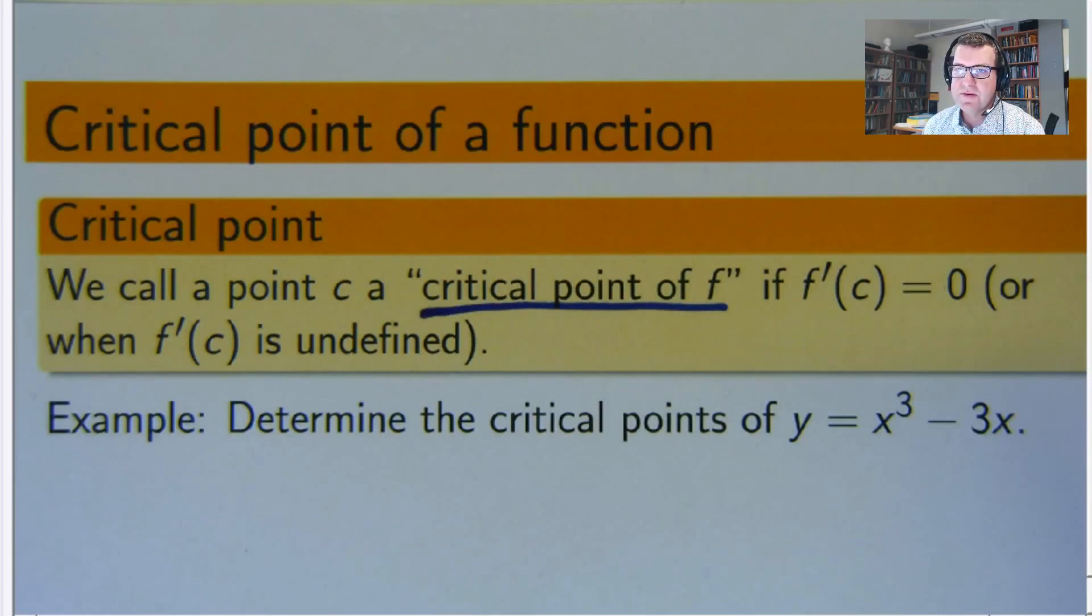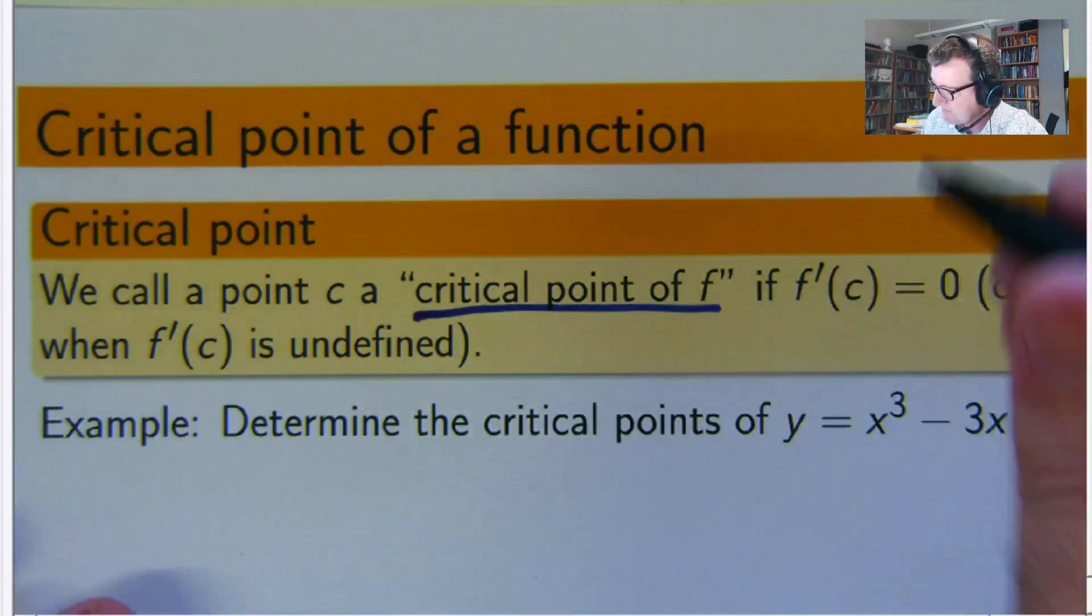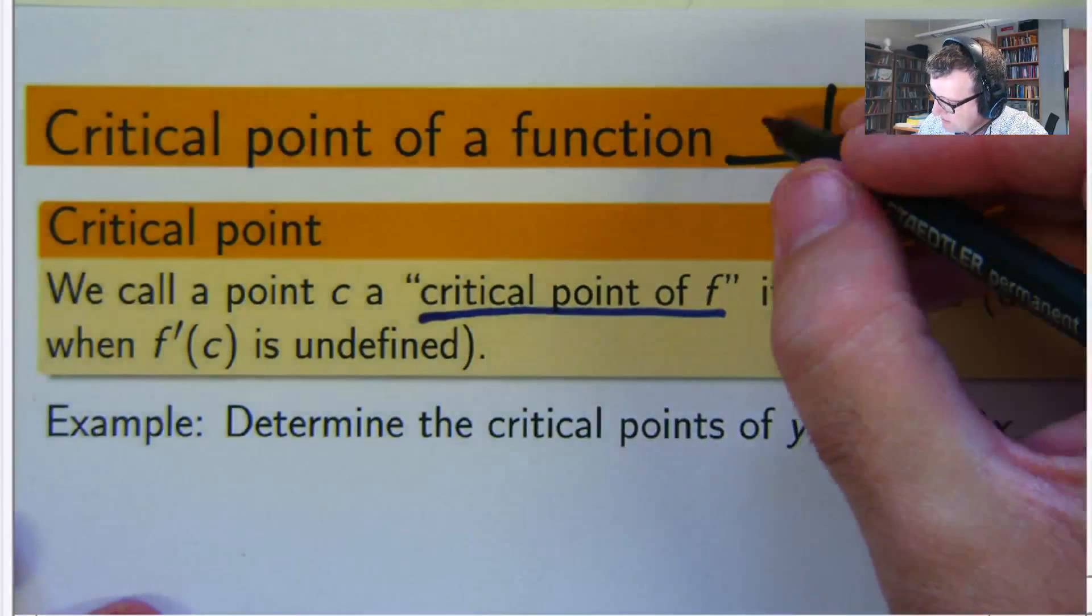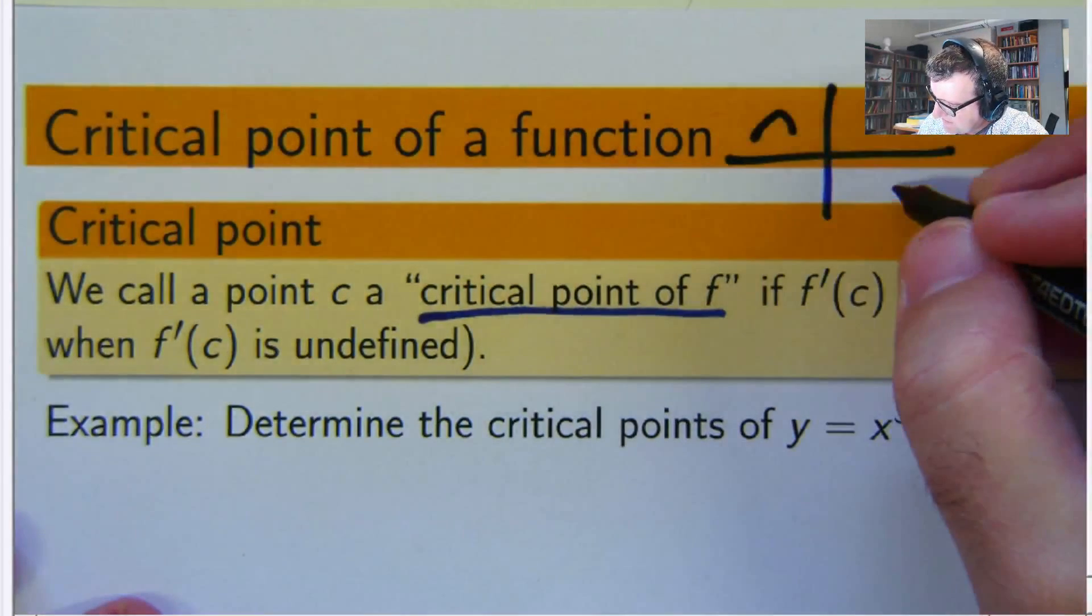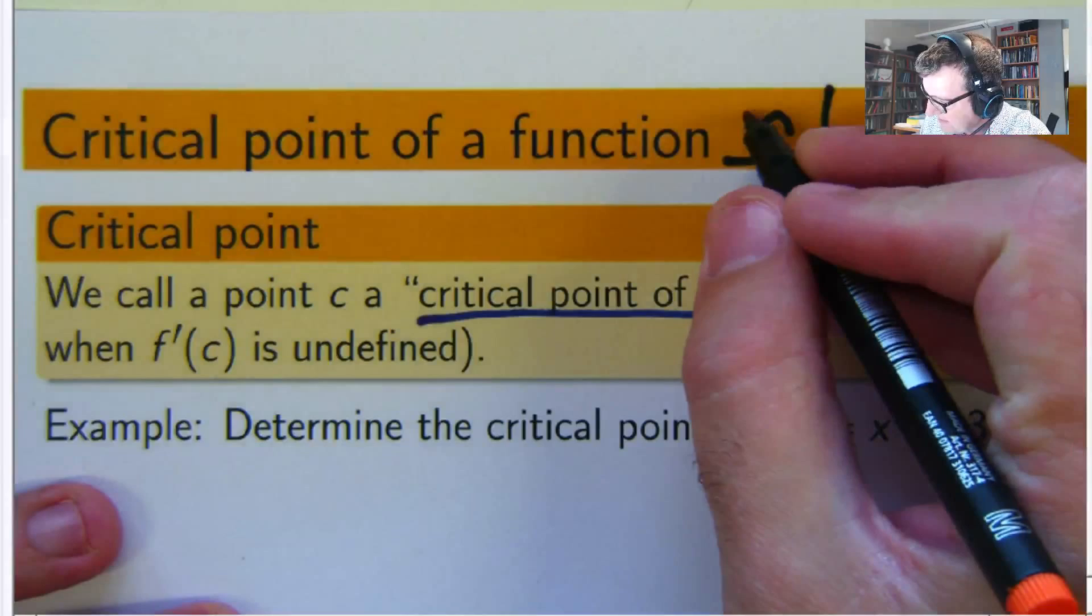So determine the critical points of this function here. So firstly, what is the geometric meaning of a critical point? What does this mean here? Well, it's essentially a place where the slope of the tangent line is 0.